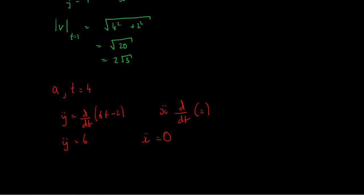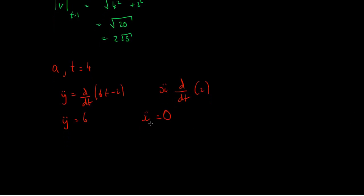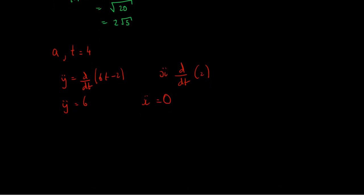Because if we differentiate a constant, we end up with 0. So we can see that we have no acceleration in the x-direction, but we have a constant acceleration of 6 in the y-direction.